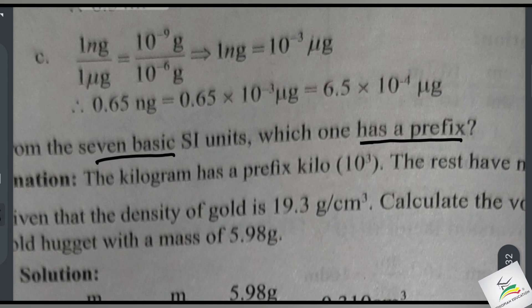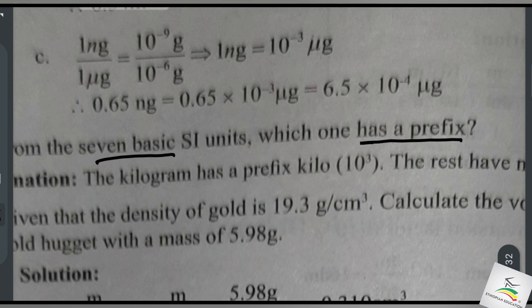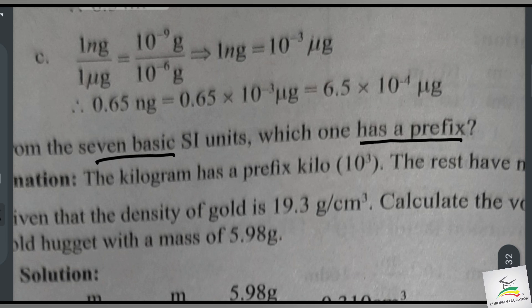Finally, the seven basic SI units are: length, time, temperature, amount of substance, electric current, and luminous intensity.